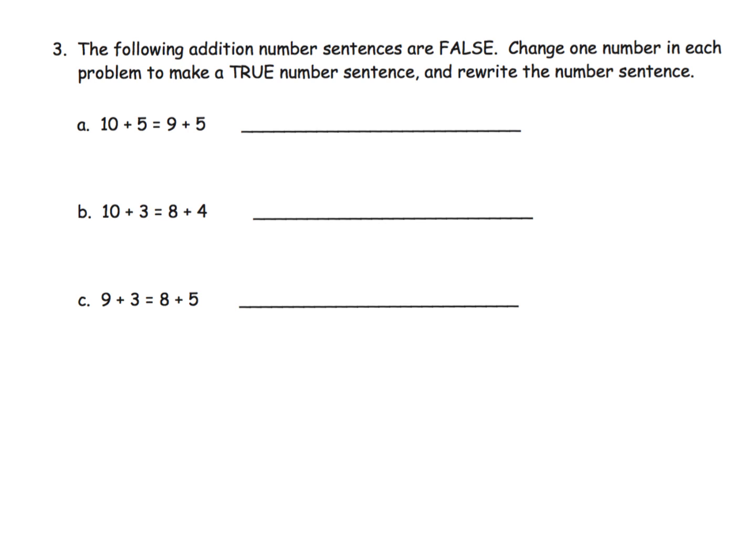So let's take a look at just B. So we've got 10 plus 3, and that equals 13, is equal to 8 plus 4, and that's equal to 12. So clearly, that is a false statement, just like they said it would be.